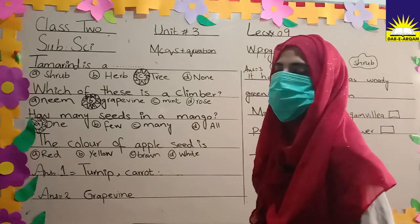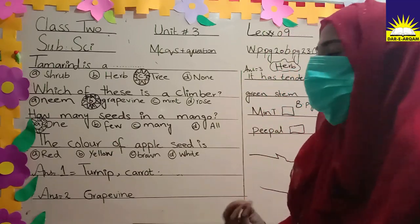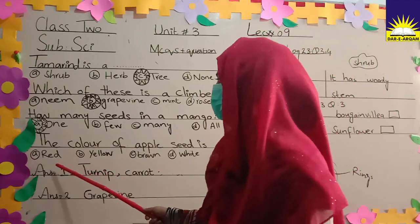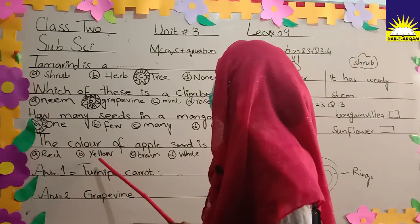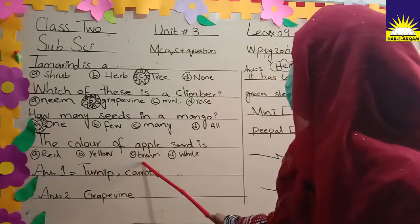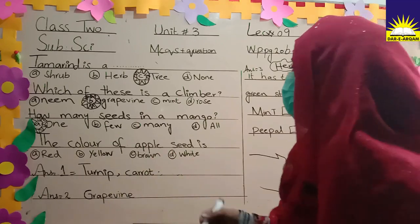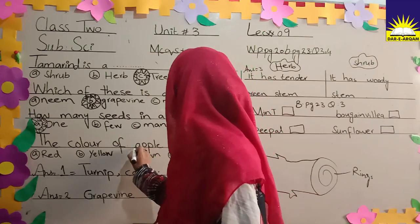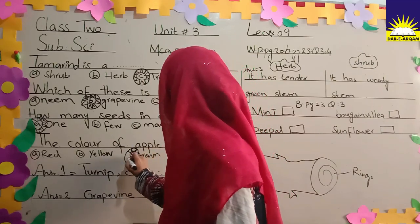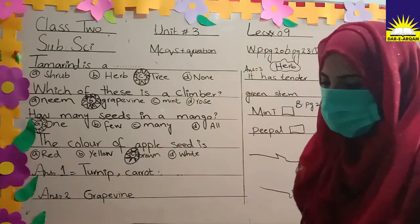What is the color of an apple seed? The options are: red, yellow, brown, and white. We know that apple seeds are brown. We eat apples because they are very useful. The correct answer is brown.